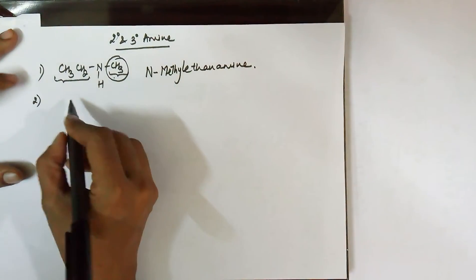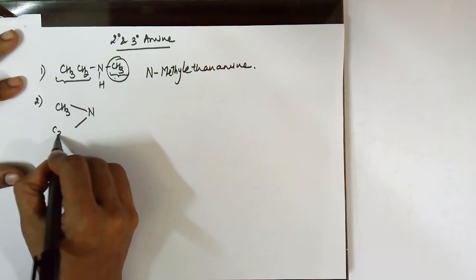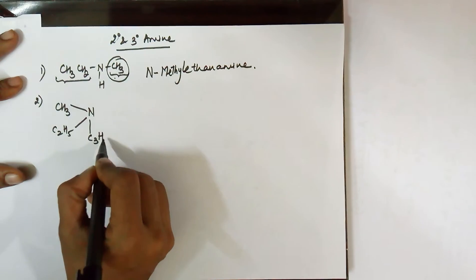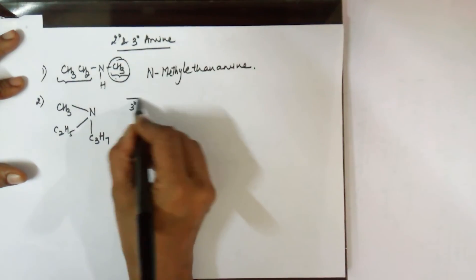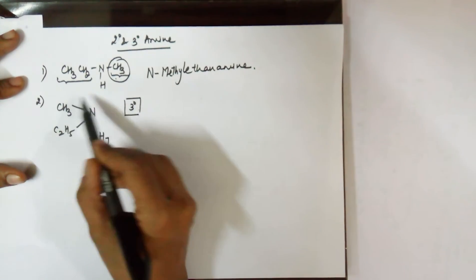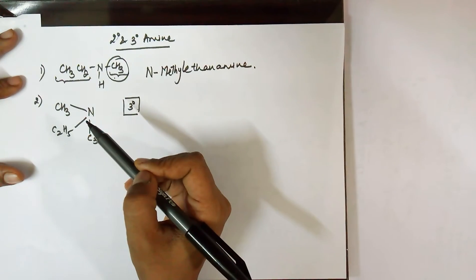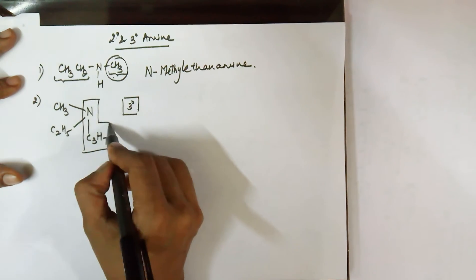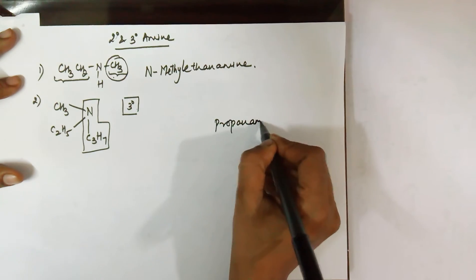I'll take another example for clarity. This is a 3° amine. There are three different R groups. You cannot count them all together because of the presence of nitrogen in between. Choose the bulkiest of them - that is this. So this is your parent grouping, and you will call it as propanamine.